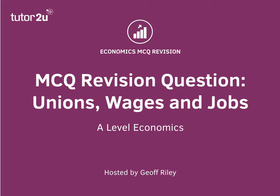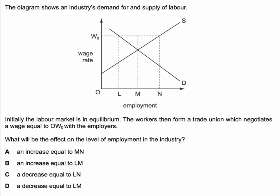Here's a labour market question to have a go at. It concerns the effect on the labour market of a union negotiated minimum wage. The diagram shows an industry's demand for and supply of labour. Initially, the labour market is in equilibrium. The workers then form a trade union, which negotiates collectively a wage equal to OW0 with the employers. The question is, what will be the effect of this on the level of employment in the industry?